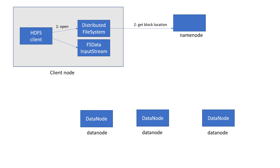The NameNode gives that block location information to the client, and then the client will initiate a connection with the FSDataInputStream. The input stream will perform a read operation — it will connect to DataNode 1, where some of the blocks are available, and read the data from there.